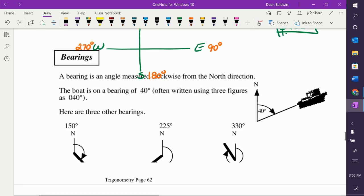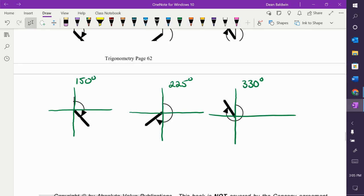So if somebody says on a bearing of 150—this is your north and your zero. You know this is 90, you know this is 180. So 150 is somewhere in the middle, in there, right? So this whole angle is 150 degrees.